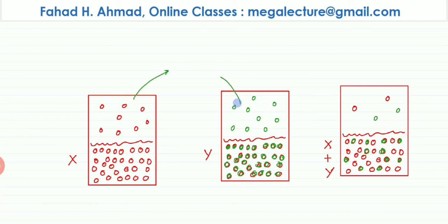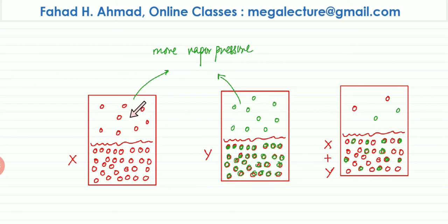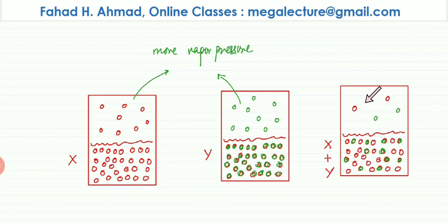In the containers for X and Y, vapor pressure is high because more vapor is formed — those vapor particles collide with the walls and exert a greater pressure. But in mixture Z, the strong intermolecular forces make it much harder for particles to evaporate. Fewer vapor particles means fewer collisions with the walls, so mixture Z will have much lower vapor pressure.